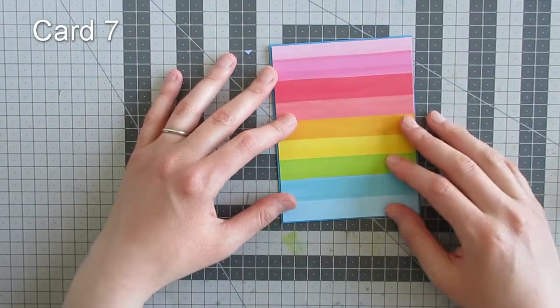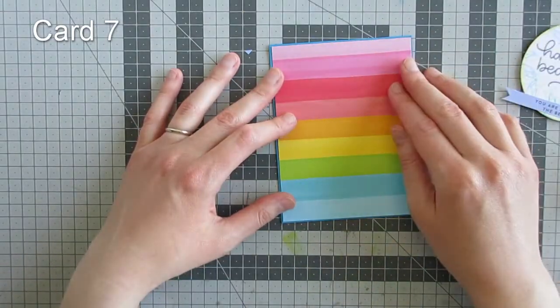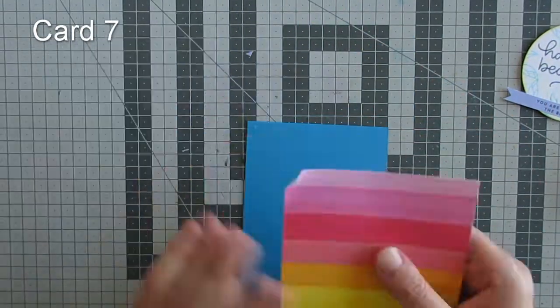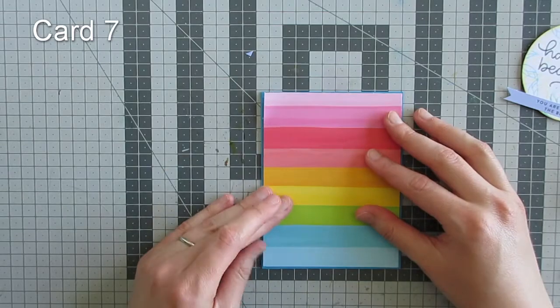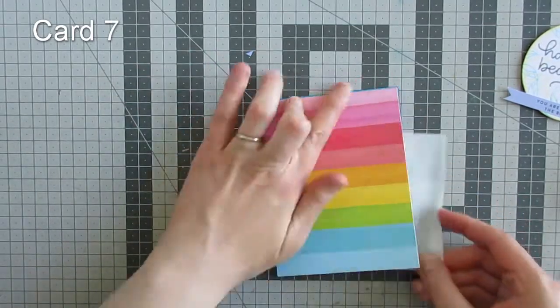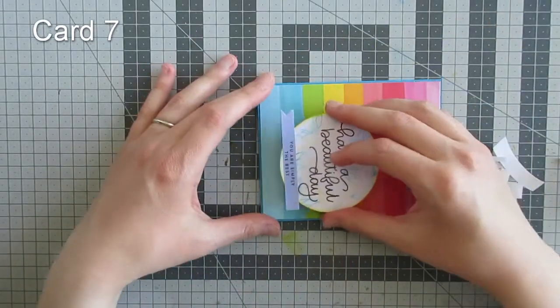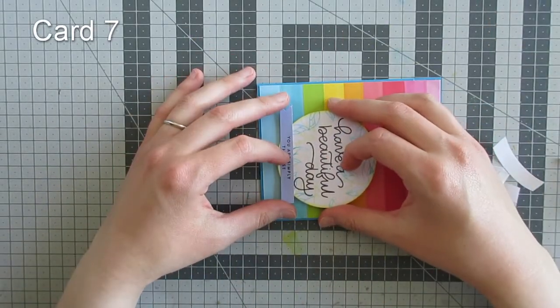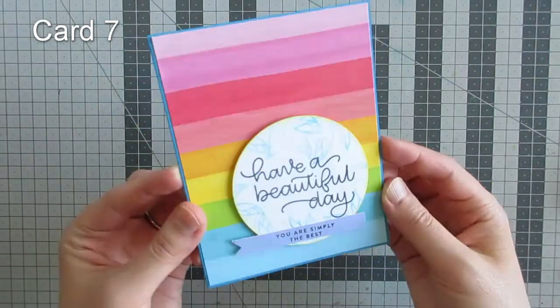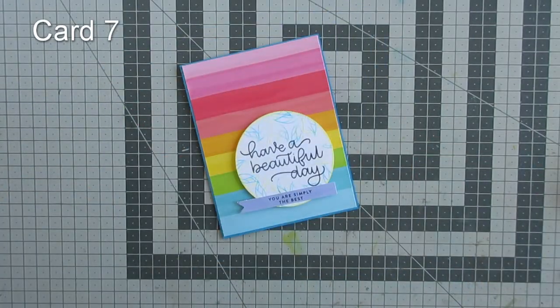I have a piece of one of the patterned papers which is my base panel. I adhered that down to the card base just flush. I also cut a banner from this patterned paper and stamped a secondary sentiment onto it. I adhered the banner onto the circle and popped those both up on foam tape onto my stripey card base.